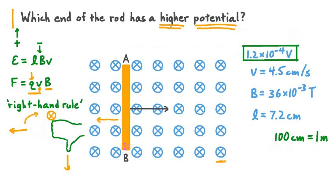This means that at the opposite end of the rod, end A, all the negative charges that left will leave an abundance of positive charge. Now that we have charge separation across the ends of our conductor, we can answer which end has a higher potential. Because positive charges have a higher electrical potential than negative ones, the end with the most positive charge has the higher electrical potential — and that is end A.